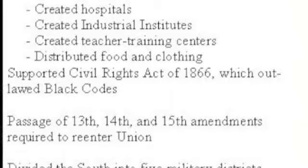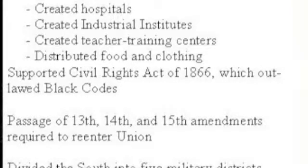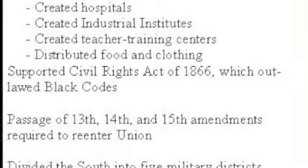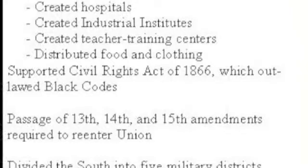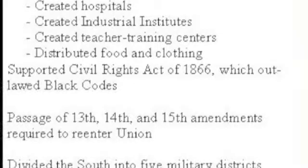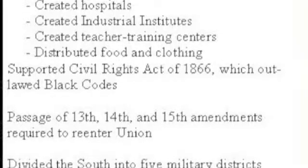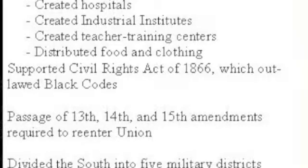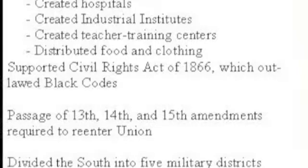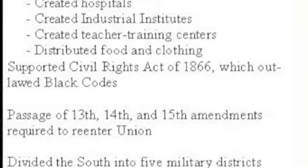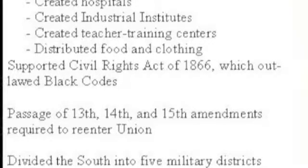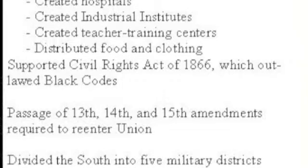The Radical Republicans were actually a minority of Republicans. They believed blacks were entitled to the same political rights as whites — that's one of the things that made them radical. They wanted to punish Confederate leaders, create the Freedmen's Bureau with hospitals and teaching centers, and pass the Civil Rights Act. In fact, they did, but it was vetoed by Andrew Johnson, and then they overturned it, which was one of the first times in history that occurred. They created the 14th Amendment defining African Americans as citizens, and they divided the South into military districts.